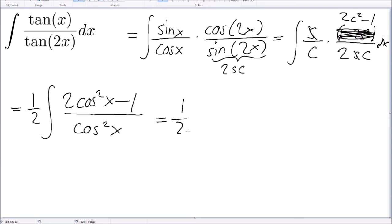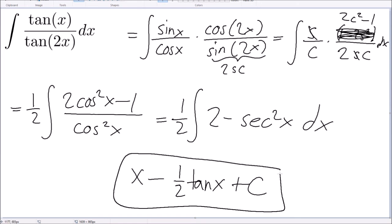This is just 2, 2 minus secant squared. So much easier. So now this is just x minus a half of tangent x, which is the exact same answer that I got before. So that's that. Let's go.